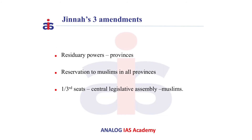Later, in December 1928, another all-party meeting was held at Calcutta. In this, Muhammad Ali Jinnah proposed three amendments. They are: residuary powers to be given to the provinces; reservation to the Muslims should be in all the provinces in proportion to their population; and one-third seats should be reserved in the central legislative assembly for the Muslims. This was not accepted, and finally the Muslim League boycotted this report. Thus, the Nehru Report became invalid.